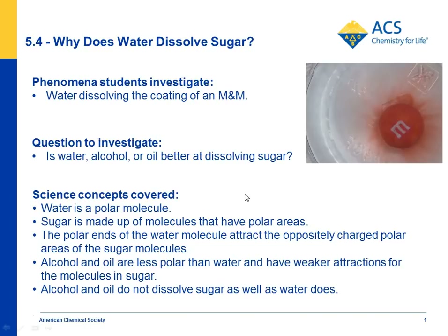The main science concepts covered are that water is a polar molecule — students have seen that before — that sugar is made up of molecules that have polar areas, that the polar ends of water molecules attract the oppositely charged polar areas of sugar molecules, helping them to dissolve, and that alcohol and oil are less polar than water and have weaker attractions for the molecules in sugar, so they're not as good at dissolving sugar as water is.